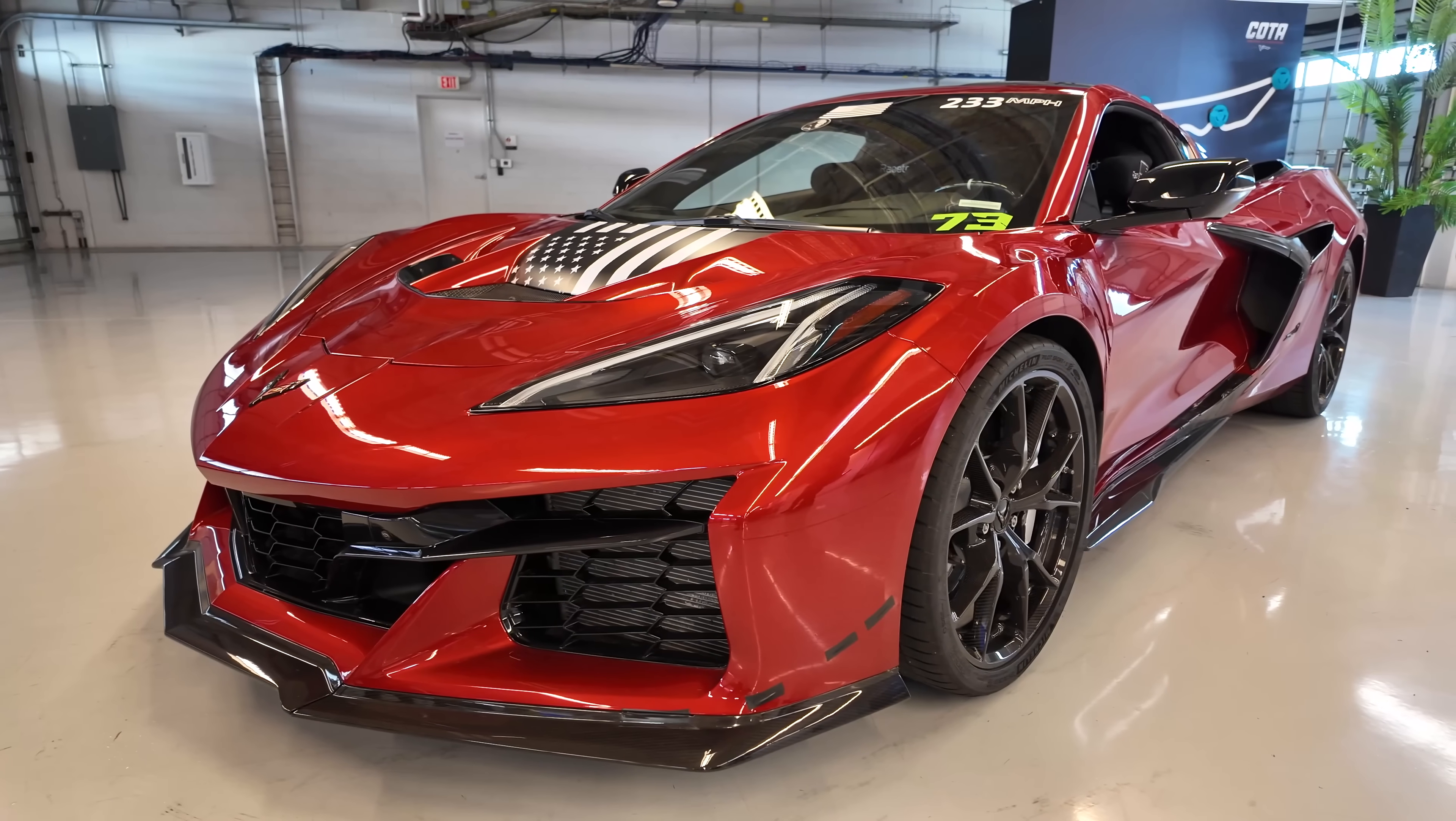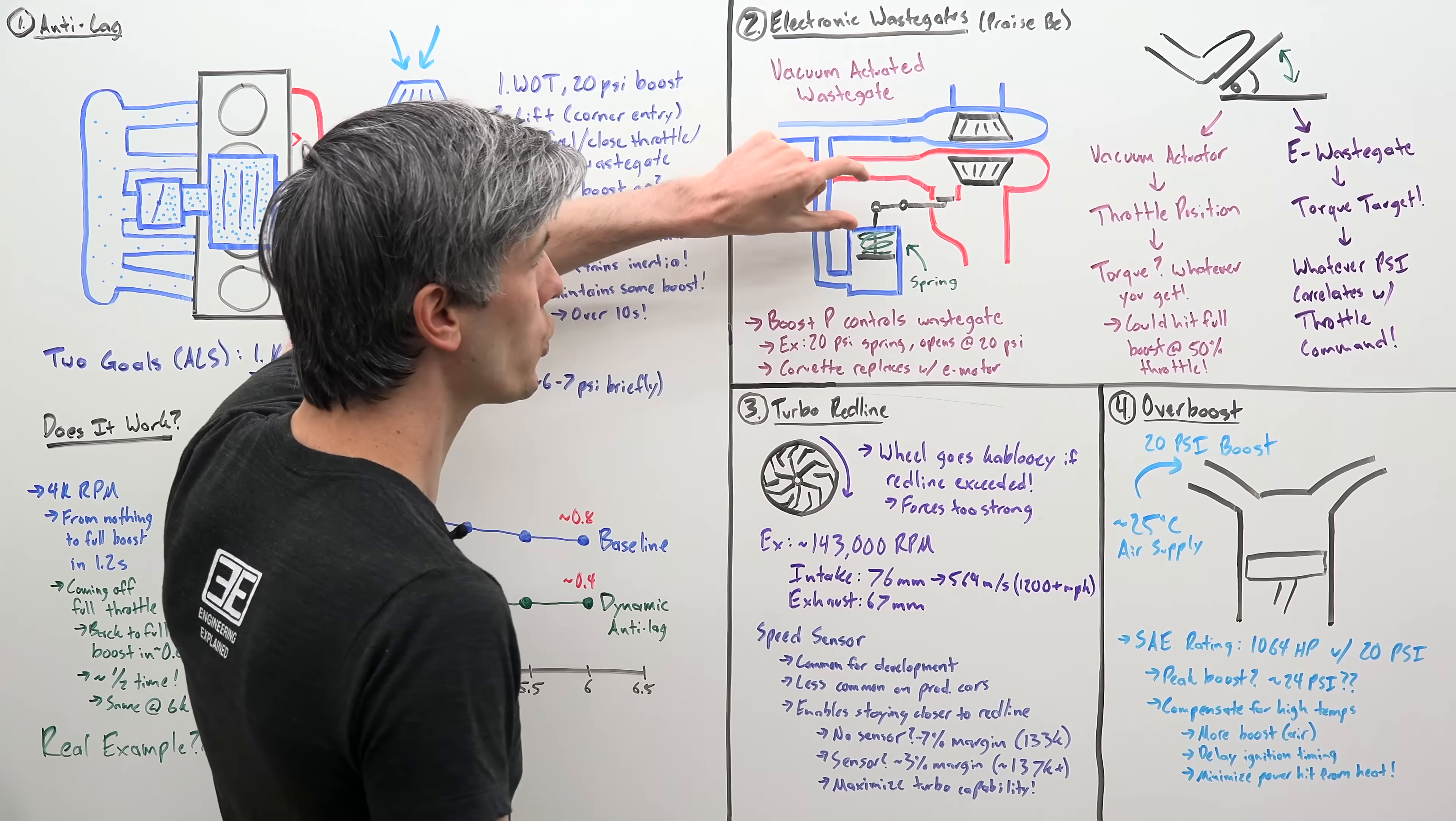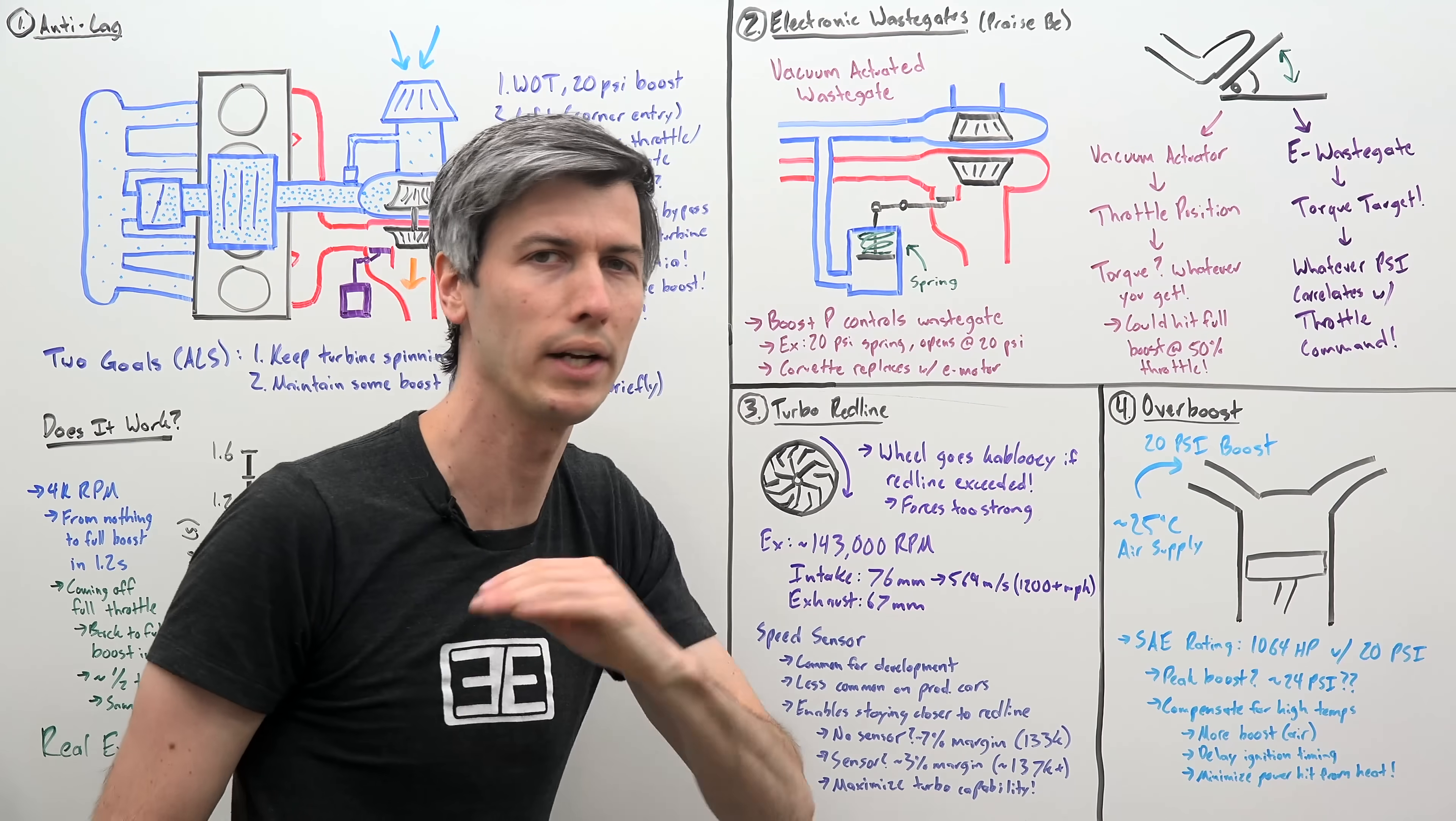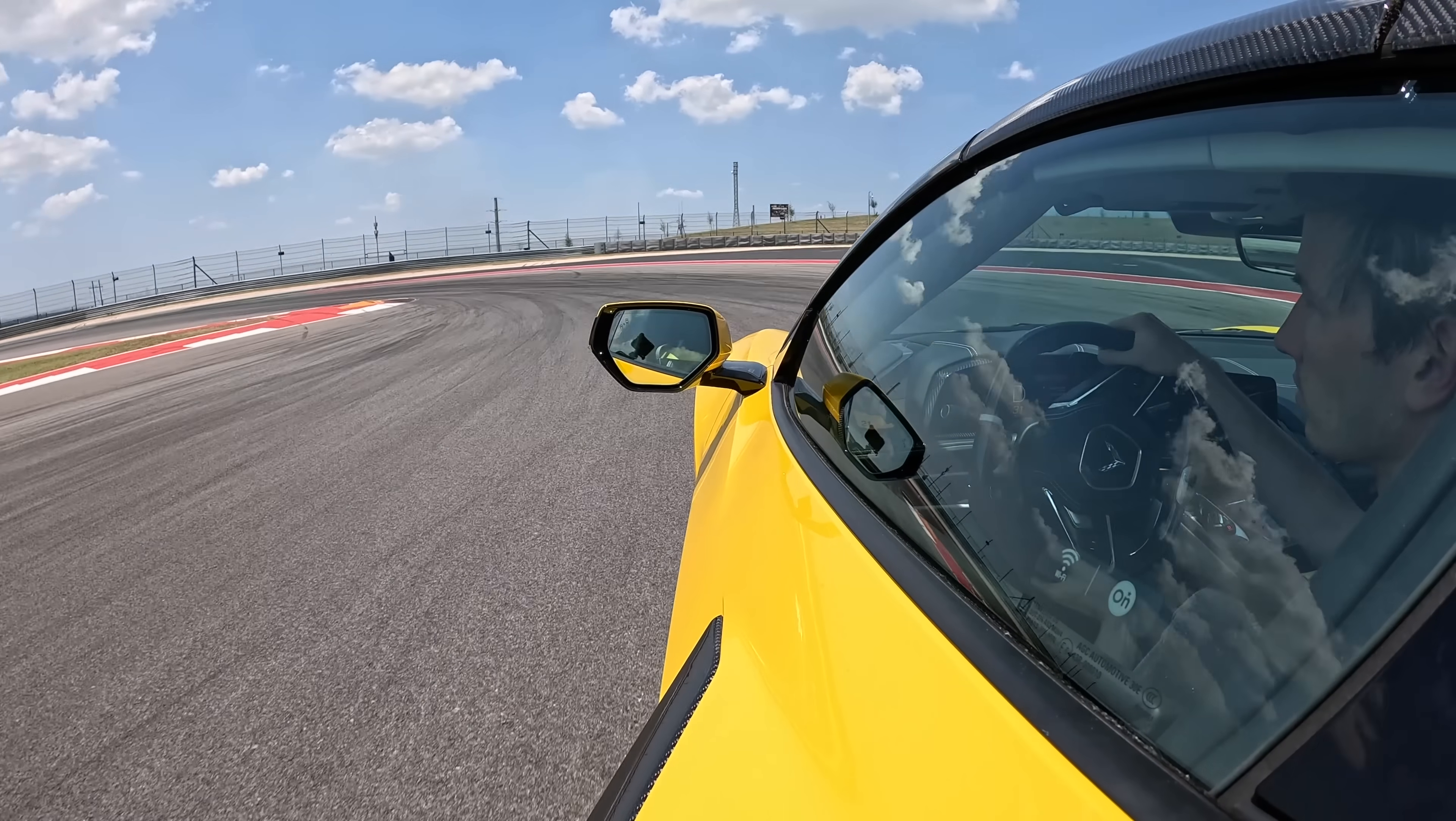So the Corvette replaces this vacuum-based actuator with an electronic wastegate. Instead of this spring and air system, you just have an electric motor, and that electric motor can open or close this wastegate whenever it wants at whatever percentage it wants. So let's walk through the same scenario with both types of technology.